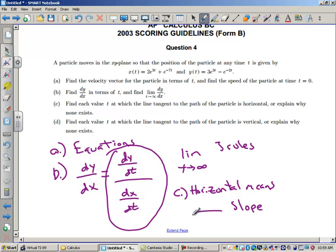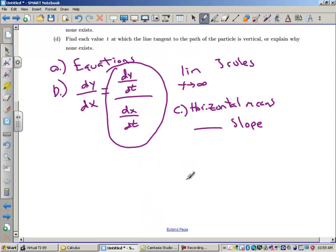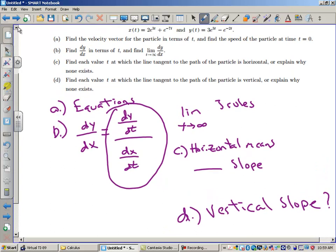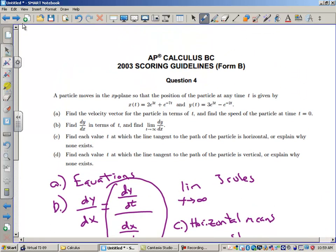All right, part D, find each value t at which the line tangent to the path of the particle is vertical. What does vertical slope mean? How can something have a vertical slope? Is that undefined? Is that zero? And that all depends on your answer for dy dx. So you'll need to talk about what do I need to do with dy dx and how can I make dy dx represent a vertical slope. So you're going to be working on these in groups. If you have these questions together, you guys should be able to figure these out and I will see you then.